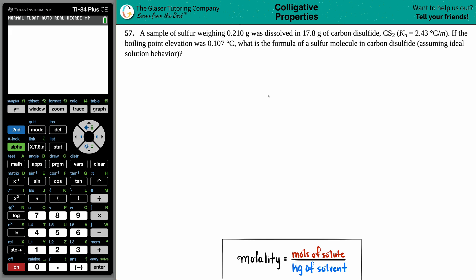Number 57. A sample of sulfur weighing 0.210 grams was dissolved in 17.8 grams of carbon disulfide, which is CS2. They give us a boiling point elevation constant, Kb, of 2.43 degrees Celsius per molality. If the boiling point elevation was 0.107 degrees Celsius, what is the formula of a sulfur molecule in the carbon disulfide, assuming ideal solution behavior?